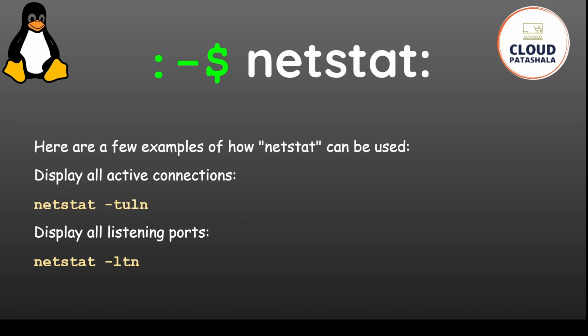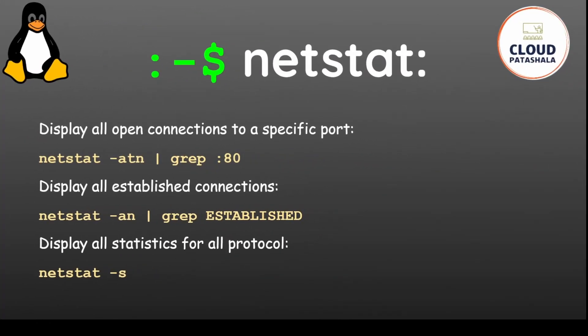Some examples of the netstat command: netstat -tuln would display all active connections on the system. If you want to display all listening ports on the server, you could say netstat -ltn and you would get the list. To display all open connections to a specific port, you could say netstat -atn and then pipe it through grep on that particular port number, which gives you the details of all connections open on that port.